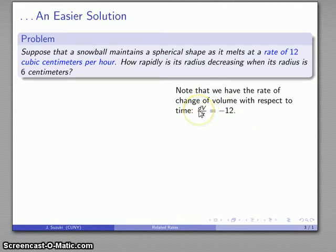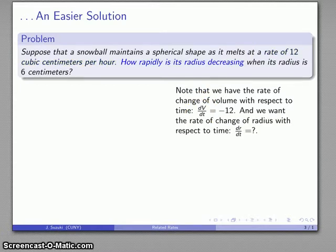This is the rate of change of volume with respect to time. It's a derivative: dV/dt is -12. I'm going to drop the units there but keep in mind that this is -12 because it's a decrease, it's melting, and the units are cubic centimeters per hour. What am I looking for? Well I'm looking for how rapidly the radius is decreasing. So I want to find the rate of change of the radius, the derivative of r with respect to time, dr/dt.